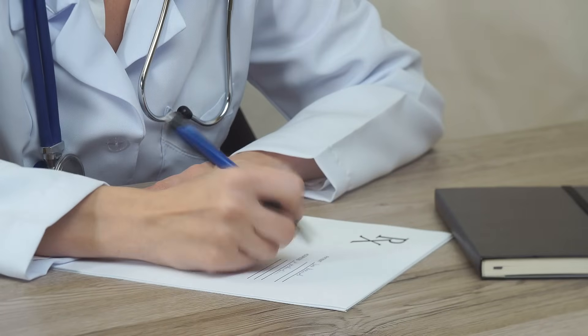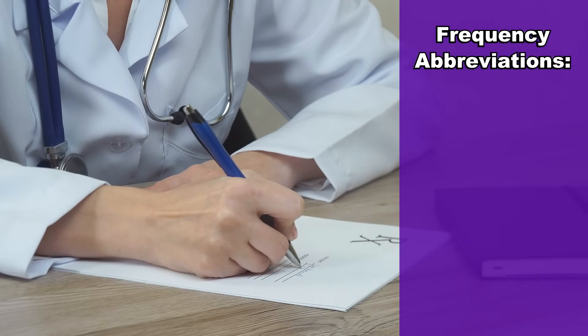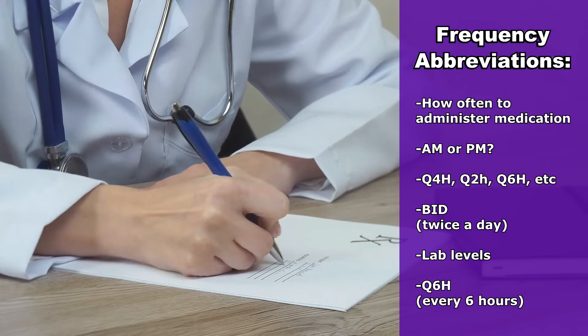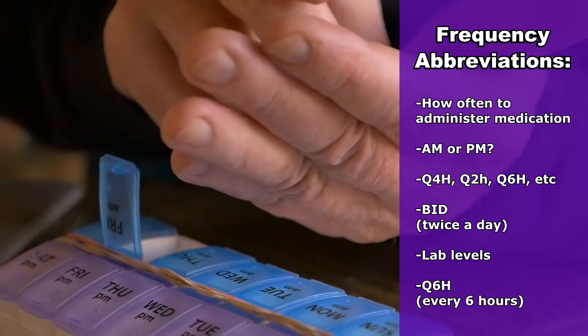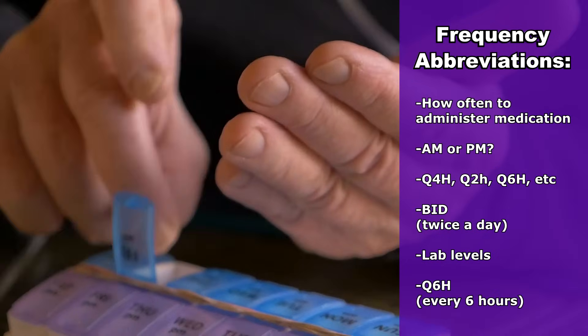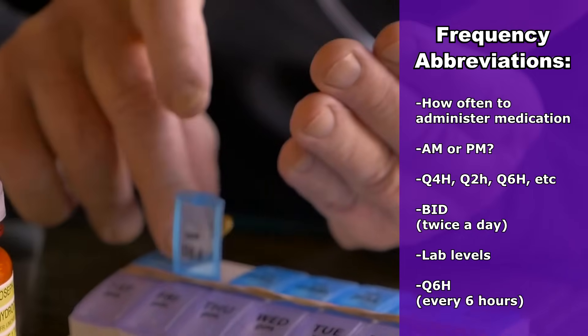It's important to be familiar with abbreviations that are used to describe frequencies. Frequencies refers to the amount of times that something should be completed or administered. For example, frequency abbreviations in nursing can be used to describe how often a patient needs to take a medication, like do they need to take it in the AM or PM, or Q4H meaning every four hours, or BID which means twice a day.